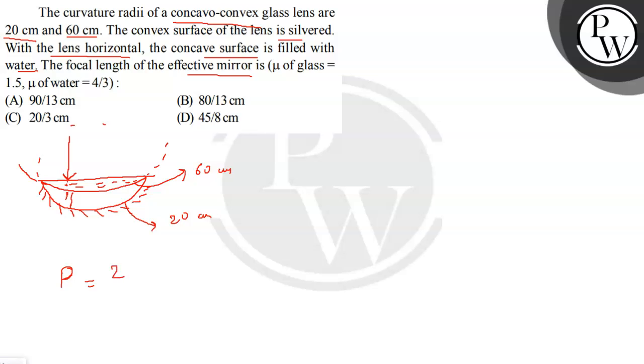So the effective power will be two times the power of water plus two times the power of the glass and minus the power of mirror. So this is the way in which we can write the effective power.